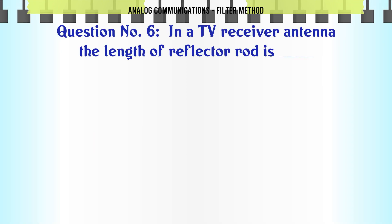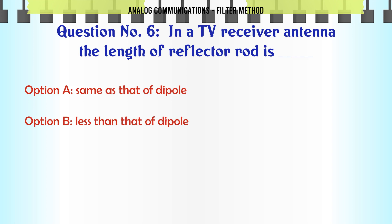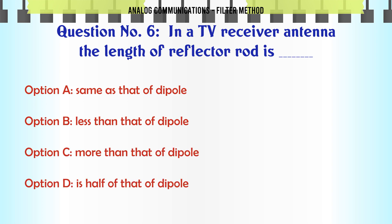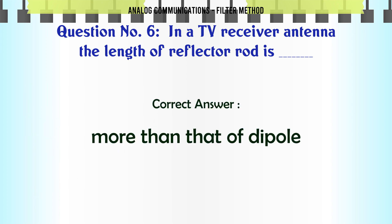In a TV receiver antenna, the length of the reflector rod is: a) Same as that of the dipole. b) Less than that of the dipole. c) More than that of the dipole. d) Half of that of the dipole. The correct answer is: More than that of the dipole.